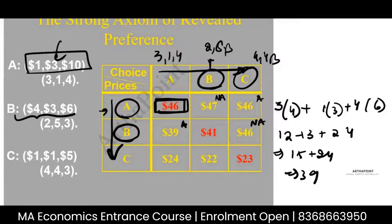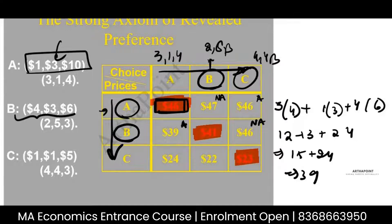Similarly, when the prices were C and the bundle chosen was also C, my income was 23. B was affordable, but A was not affordable because I cannot spend 24 — all I had was 23.